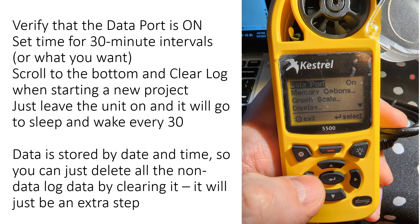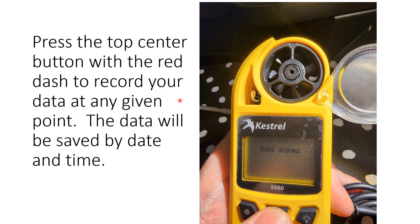The data is stored by date and time, so make sure you've inputted your date and time on your Kestrel. You can scroll down to the very bottom and find 'clear data,' which lets you refresh your Kestrel unit so it doesn't have extra data in there. If you're recording data at any point and push the little red button at the top of your Kestrel, it will store the data at that moment — wind speed, temperature, relative humidity, all that — regardless of the regular recording interval. It will be stored by both date and time.